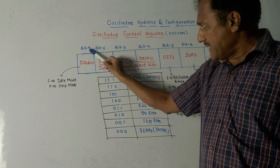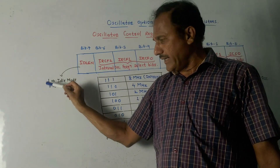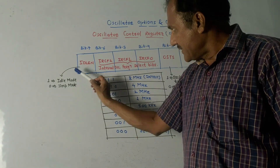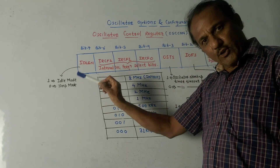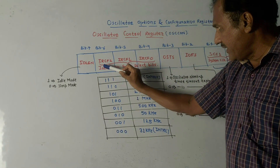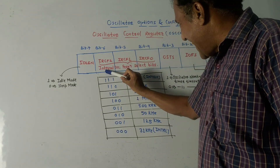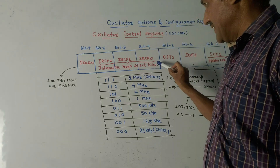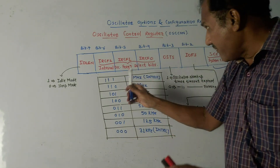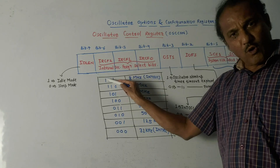Bit number 7, that is the MSB, is the IDLEN bit — idle mode. If this bit is 1, it indicates that the microcontroller is in idle mode after the sleep instruction. If this bit is 0, it indicates that the microcontroller is in sleep mode. Bits 6, 5, and 4 — written as IRCF2, IRCF1, and IRCF0 — are used as internal oscillator frequency select bits. The different combinations of bit numbers 6, 5, and 4 range from 1-1-1 down to 0-0-0.